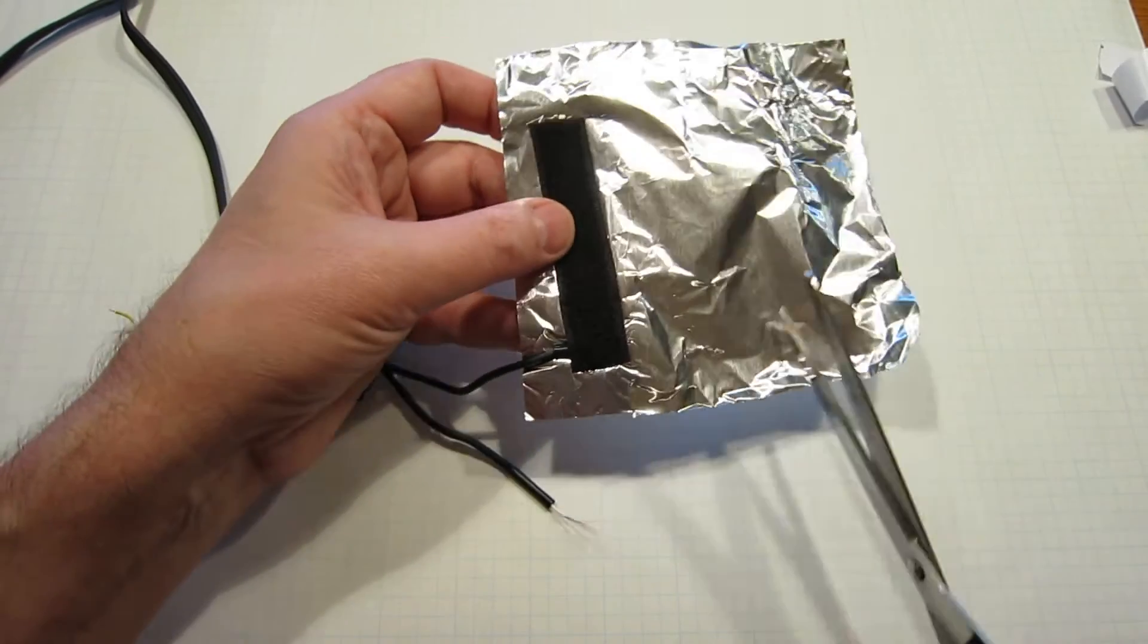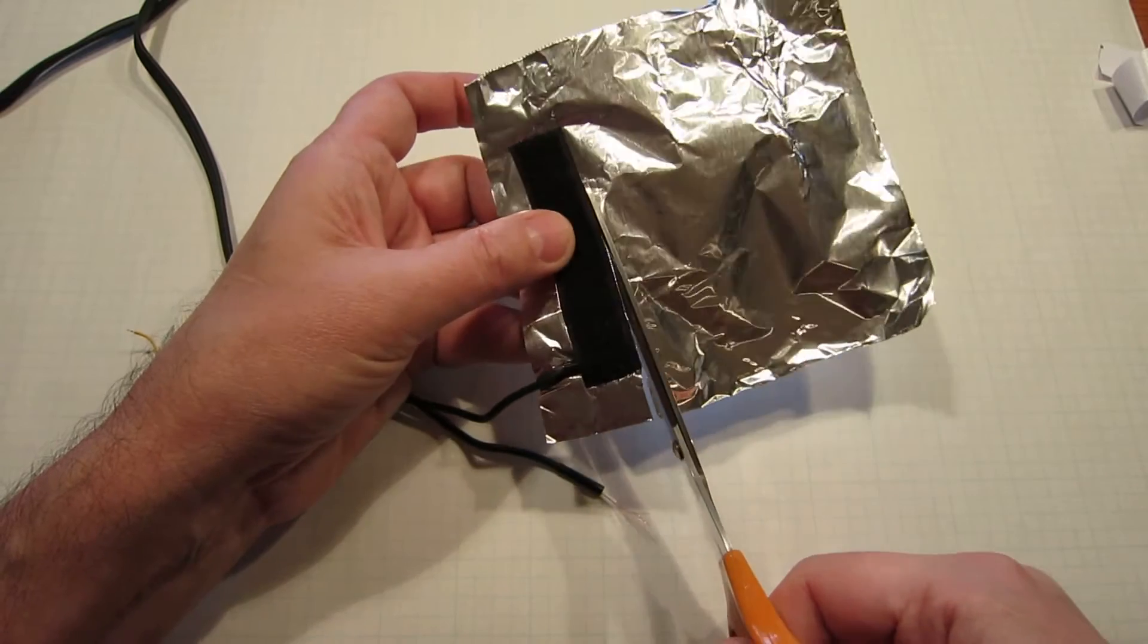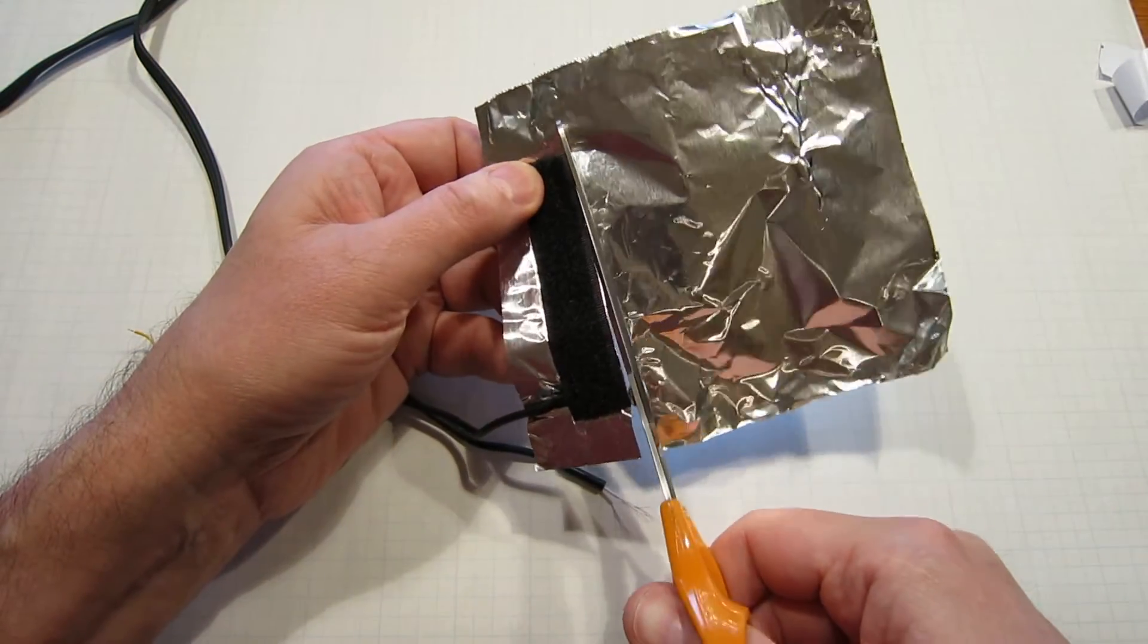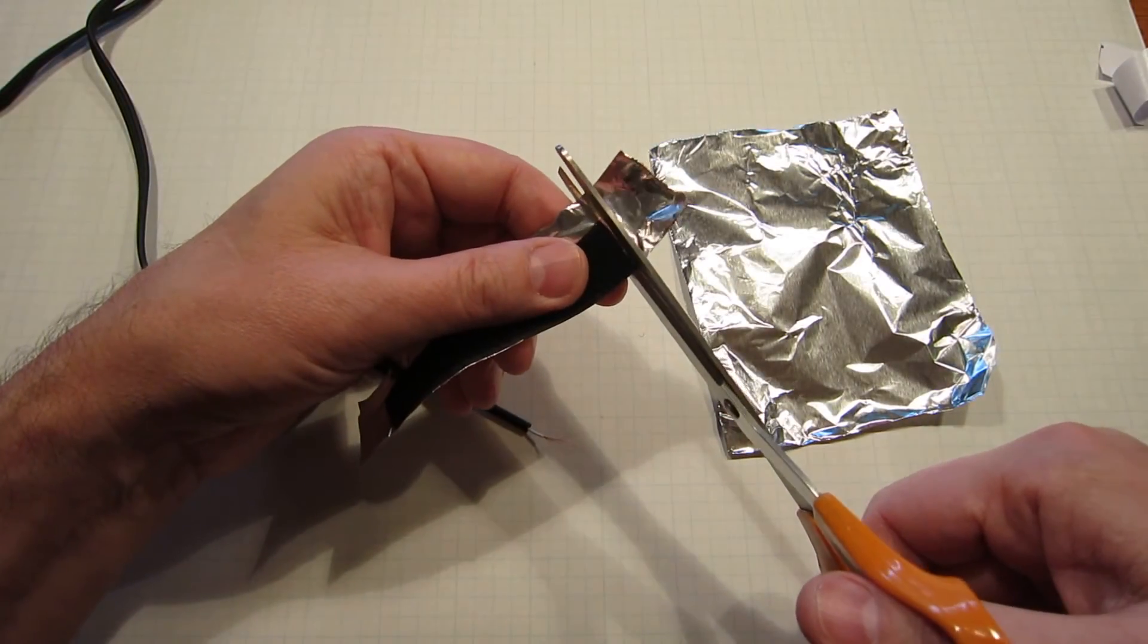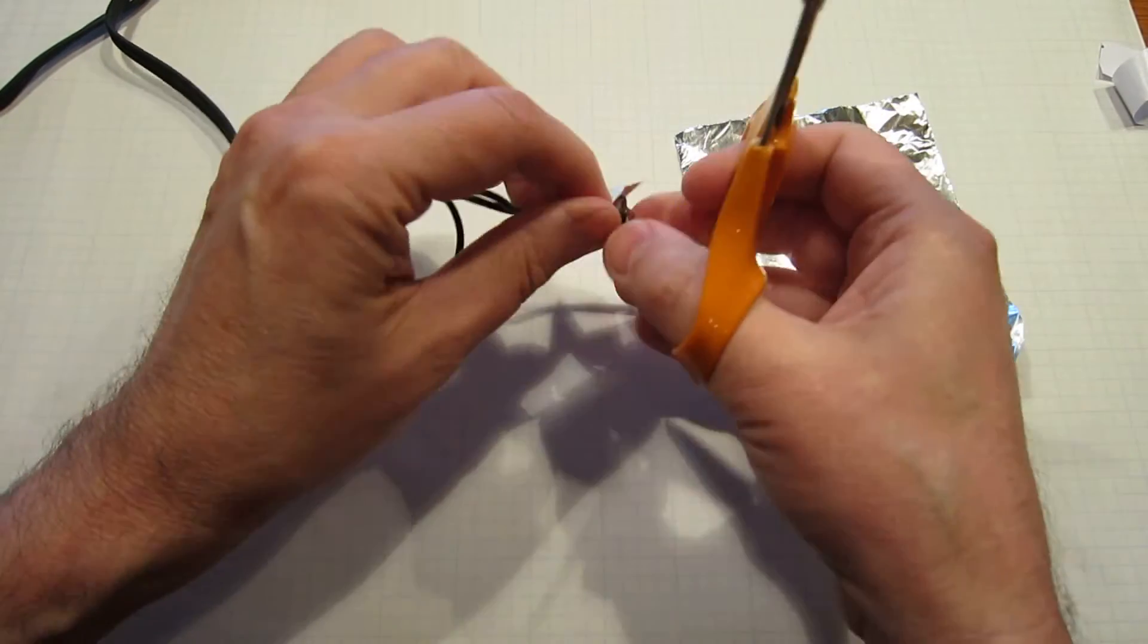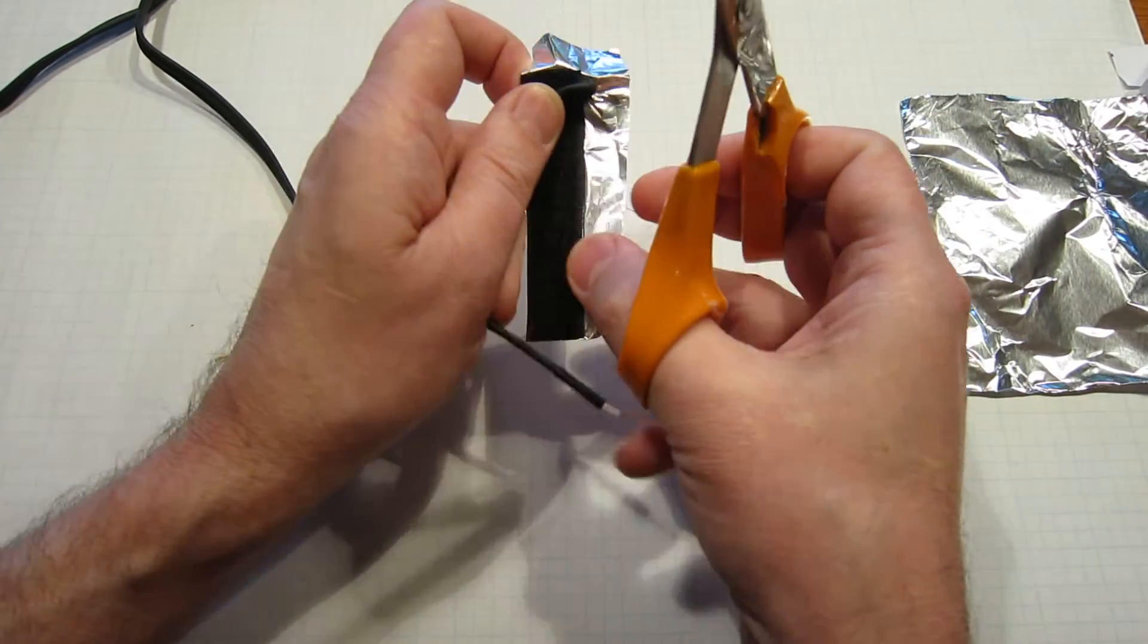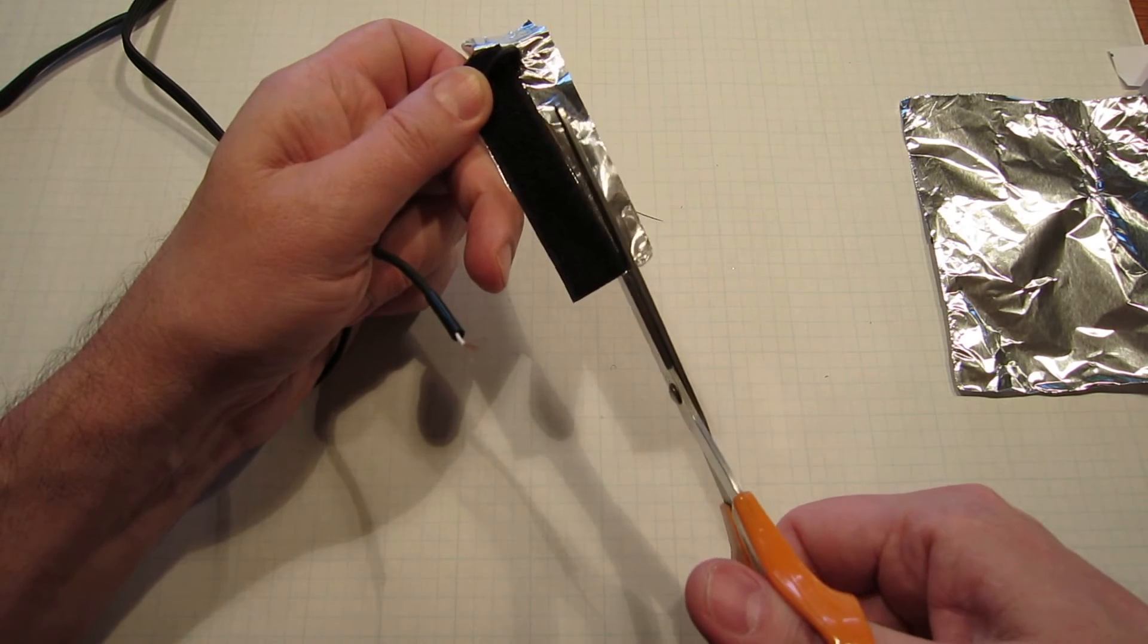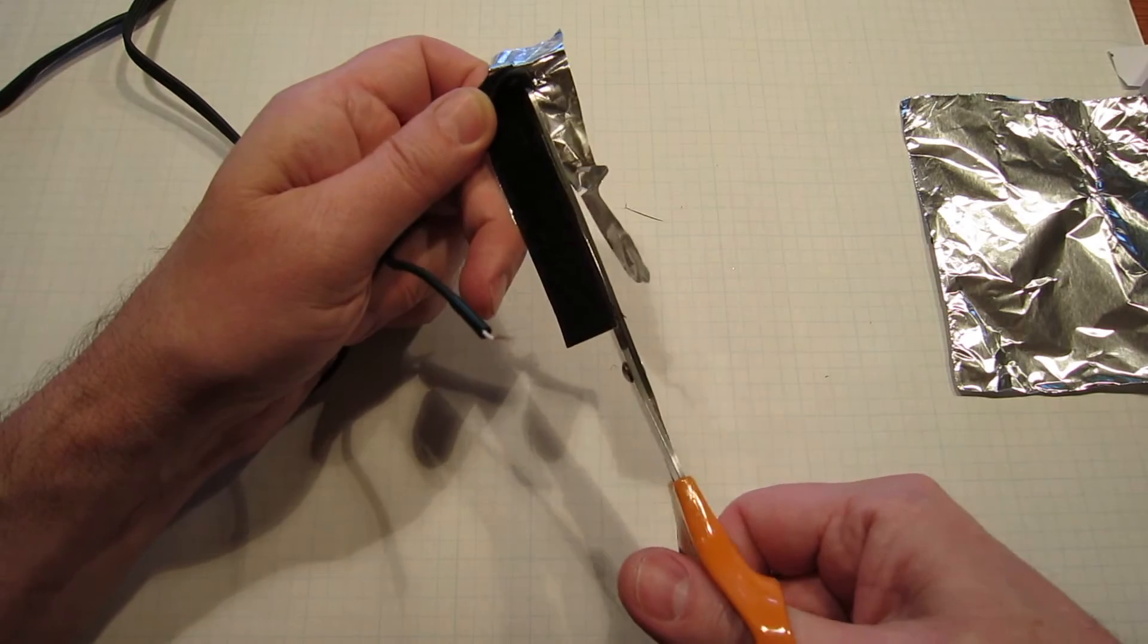Then you just need to trim around to cut off any excess aluminum foil. Make sure you don't accidentally cut the wire. You're going to do the same thing with the white wire.